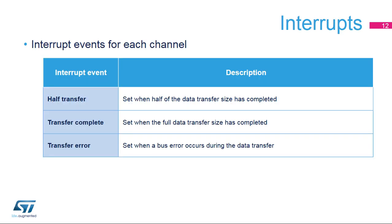Each DMA stream has a group of interrupt events. The half-transfer interrupt flag is set when half the data has been transferred. The transfer complete flag is set when the transfer is complete. The transfer error flag is set when an error occurs during the data transfer.